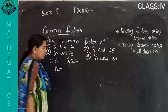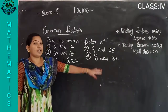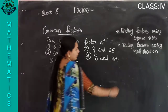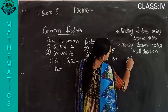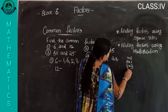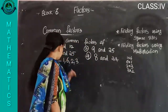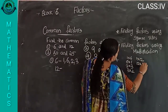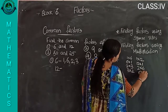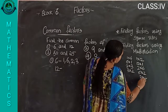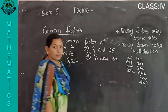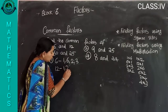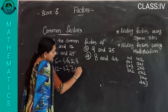Then twelve: one into twelve, twelve into one, two into six, six into two, three into four, four into three. Factors of twelve are one, two, three, four, six, twelve.